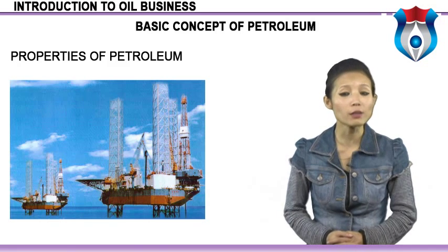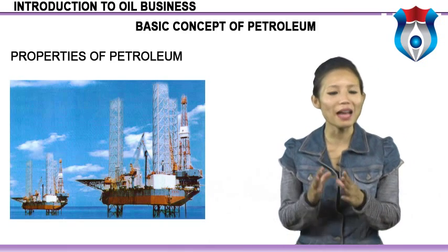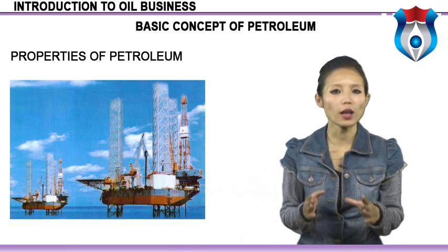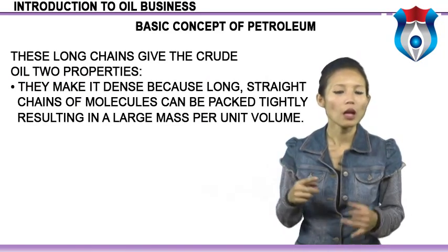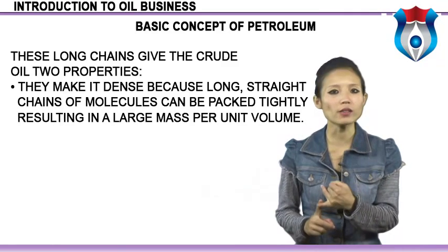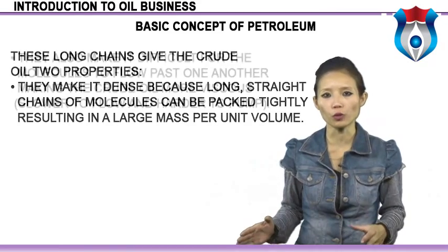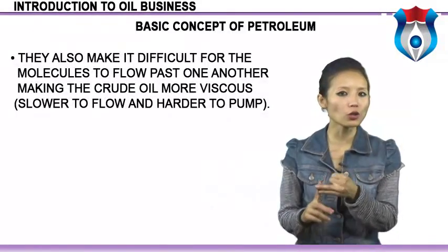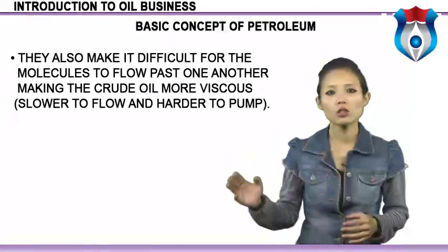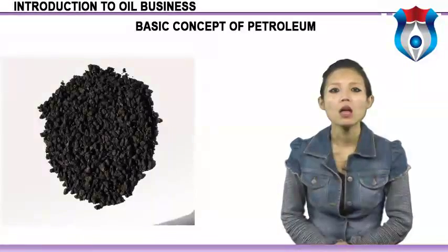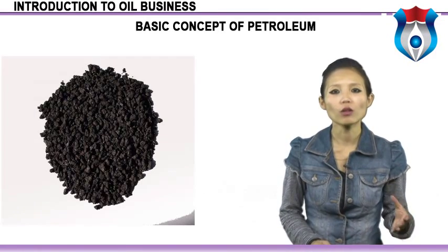So it has not been exposed to high temperatures in the earth, nor has it been buried for a very long time. The carbon atom chains in this oil are likely to be very long. These long chains give the crude oil two properties: they make it dense, because long straight chains of molecules can be packed tightly, resulting in a large mass per unit volume. They also make it difficult for the molecules to flow past one another, making the crude oil more viscous, slower to flow, and harder to pump. In addition, many sulfur compounds might be present in these oils. They are called young shallow crudes.